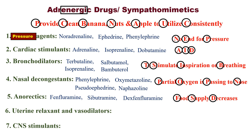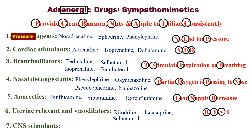Number six: Uterine relaxants and vasodilators. Relax means rest, and during rest vessels are dilating. Remember 'RIST': R for Ritodrine, I for Isoxsuprine, S for Salbutamol, and T for Terbutaline.